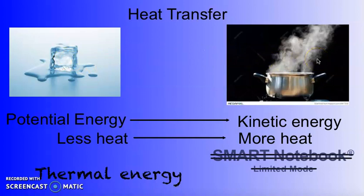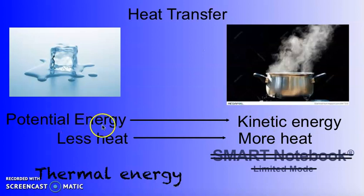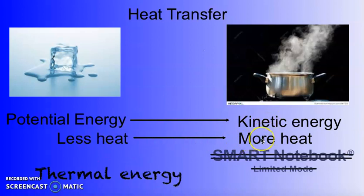If you get to steam, the molecules in the steam are moving way faster. You may remember that we've talked about potential energy and kinetic energy. Every single object that is higher than zero Kelvin — and that's basically every object there is — has kinetic energy. The pencil laying still on your desk appears still but it has movement in it, therefore it has kinetic energy. The colder something is, the more potential energy it has. The warmer something is, the more actual movement and more kinetic energy it has on the molecular level. The amount of heat has to do with the amount of kinetic energy you have on the molecular level.